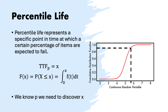An important concept in reliability theory is percentile life, often used to set maintenance events. For example, if I want to set a hard time event but I accept 10% of equipment failing before that date, I need to search for the percentile life 10. The percentile life is the specific point in time at which a given percentage of items — 10%, 90%, or whatever — are expected to fail.